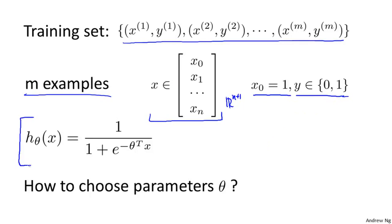This is the hypothesis, and the parameters of the hypothesis are theta. The question I want to talk about is: given this training set, how do we choose or fit the parameters theta?